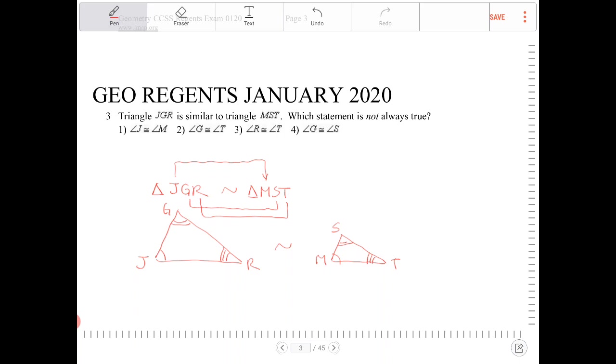The question here is not asking for which angles are congruent, but rather it's asking for which statement is not true. So let's take a look.